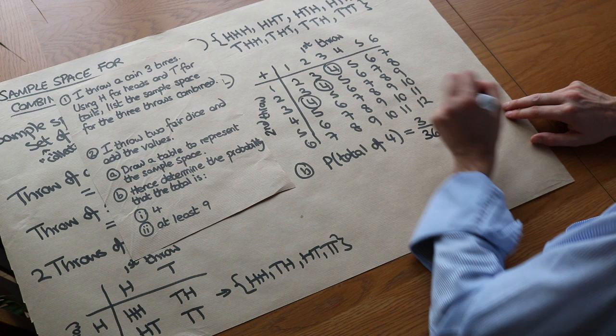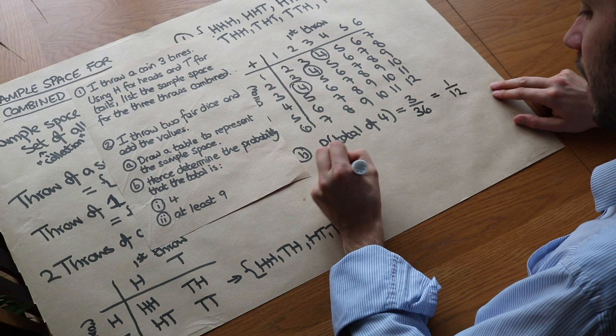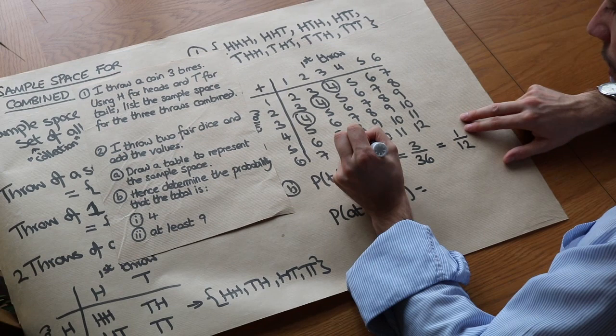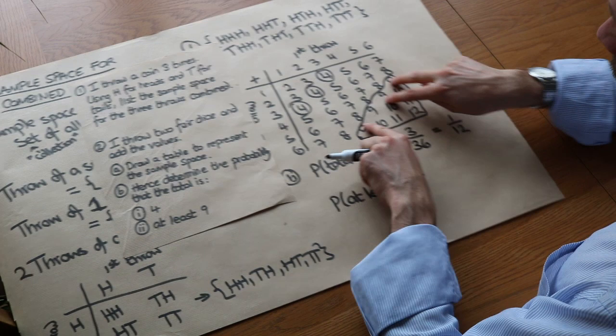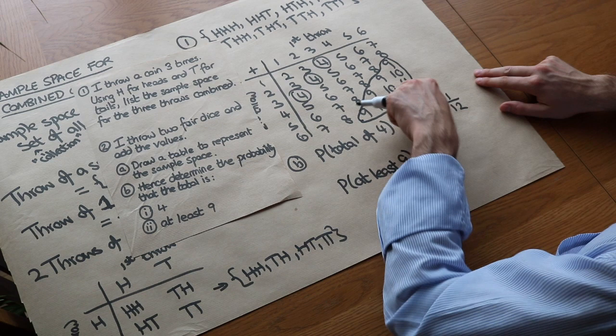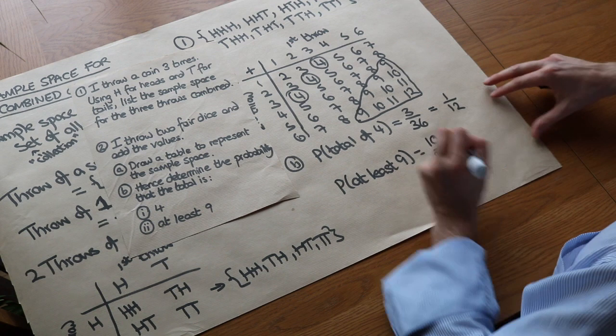What about the probability of at least 9? Well let's count how many we have in the table. At least 9. We can see all of these are 9, and then it's all of this section of the table we have at least 9. So let's count how many we have. 1, 2, 3, 4, 5, 6, 7, 8, 9, 10. So it's 10 out of the total 36 possibilities, and we can simplify that. That's going to be 5 18ths.